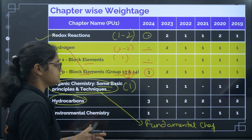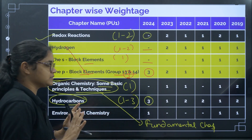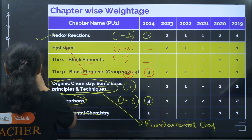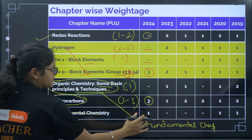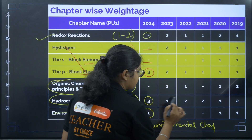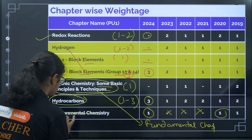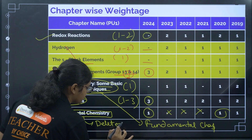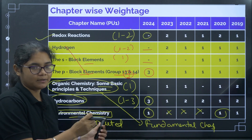Hydrocarbons — you can see three questions have been asked, so almost one to three questions can be asked from this chapter, making it an important one. Environmental Chemistry had one question in 2024, but almost no questions in the previous years — very low weightage. Also, this topic is deleted, so there is no need to waste your time on it.